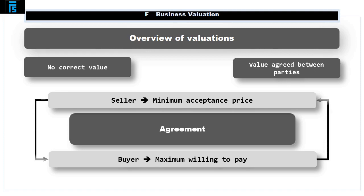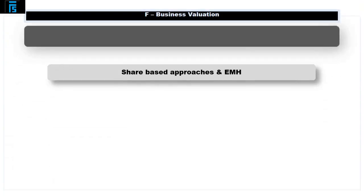The exact figure within the range will be determined by the relative bargaining power of the two parties — how much the seller wants to sell, how much the buyer wants to buy, etc. We will now look at some of the approaches that the parties might adopt in arriving at a range of valuations that they can negotiate within.